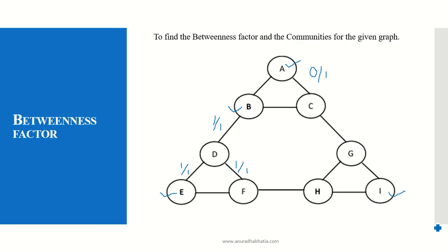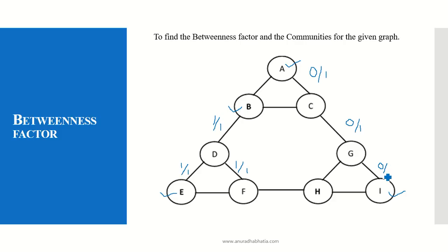When I have to reach from A to G, I can reach directly. If B comes into the picture the path increases — that is A, B, C, G — so it is again 0 divided by 1. The same thing happens when going A to C, C to G, and G to I — this is also 0 divided by 1.